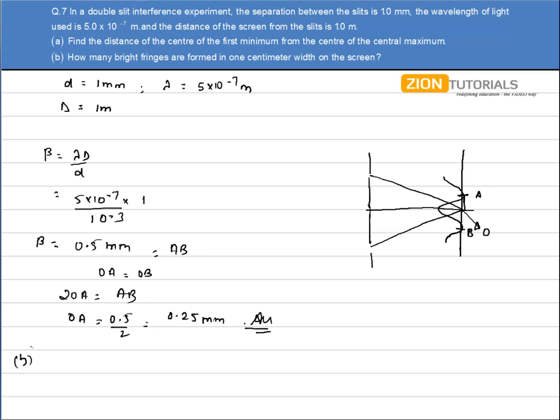In the second part, I have to calculate the bright fringes, the number of bright fringes that will be formed in 1 cm width on the screen. So I have a total length of 1 cm. I know the fringe width as 0.5 mm. So I will simply calculate the total number of fringes in 1 cm: 1 cm, or 10 mm, divided by 0.5. It comes out to be 20.